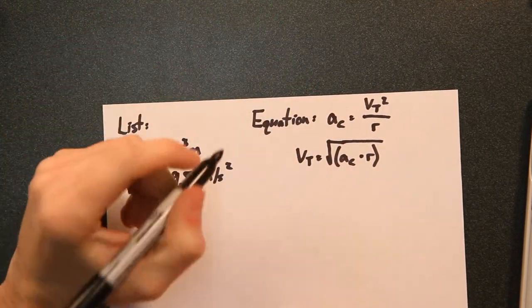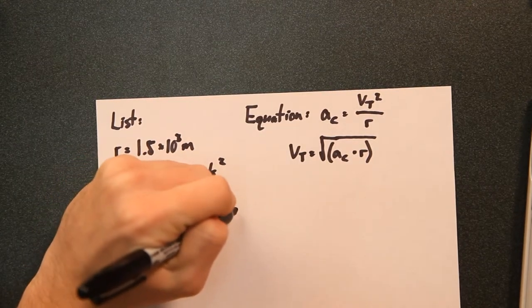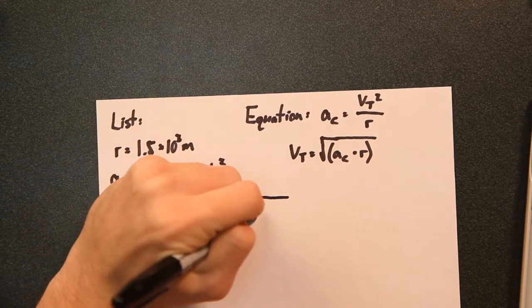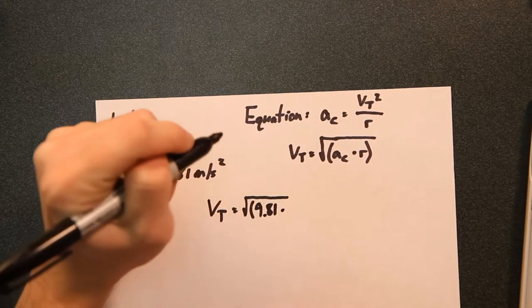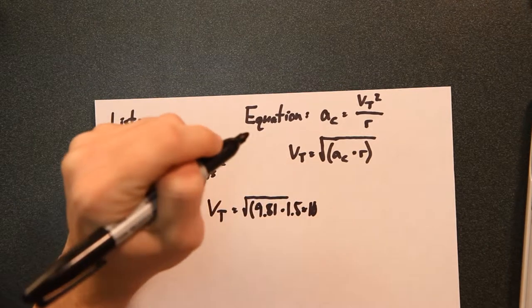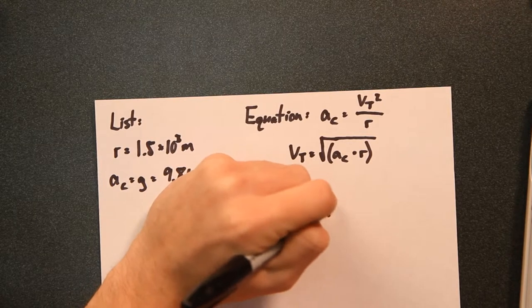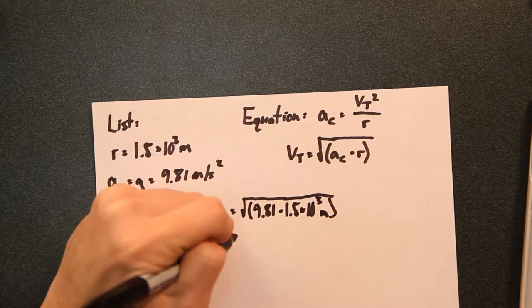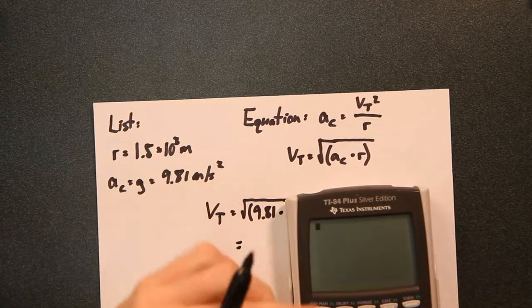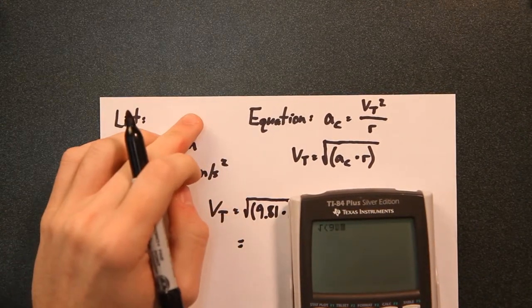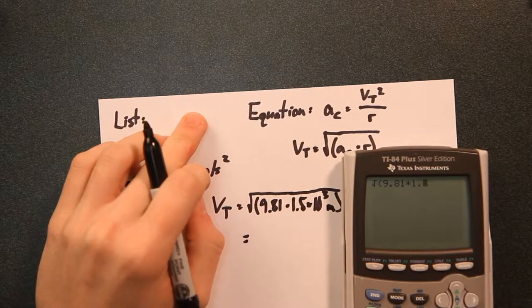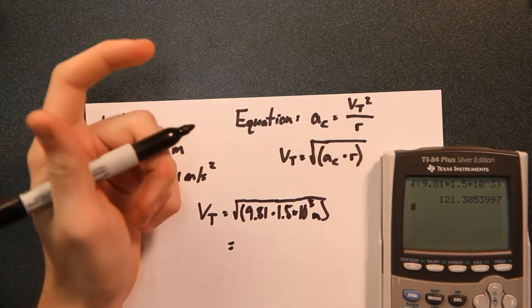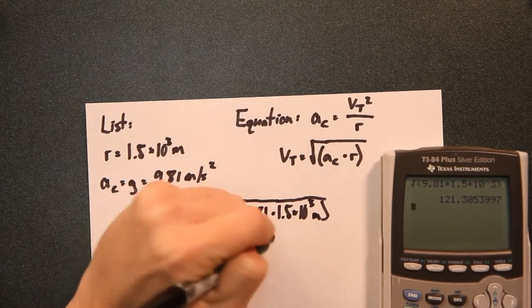So basically we're just going to take those two values and say that v sub t is equal to the square root of 9.81 times our radius of 1.5 times 10 to the third meters. That's going to give us 122 meters per second.